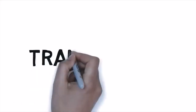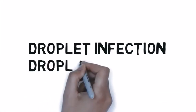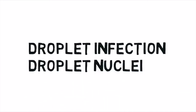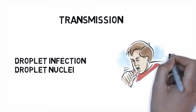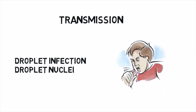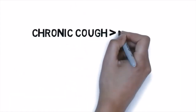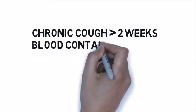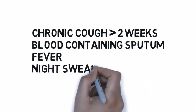TB is transmitted mainly by droplet infection and droplet nuclei generated by sputum-positive patients. Coughing generates the largest number of droplets of all sizes. The symptoms of TB include chronic cough for more than two weeks, blood-containing sputum, fever, night sweats, and weight loss.